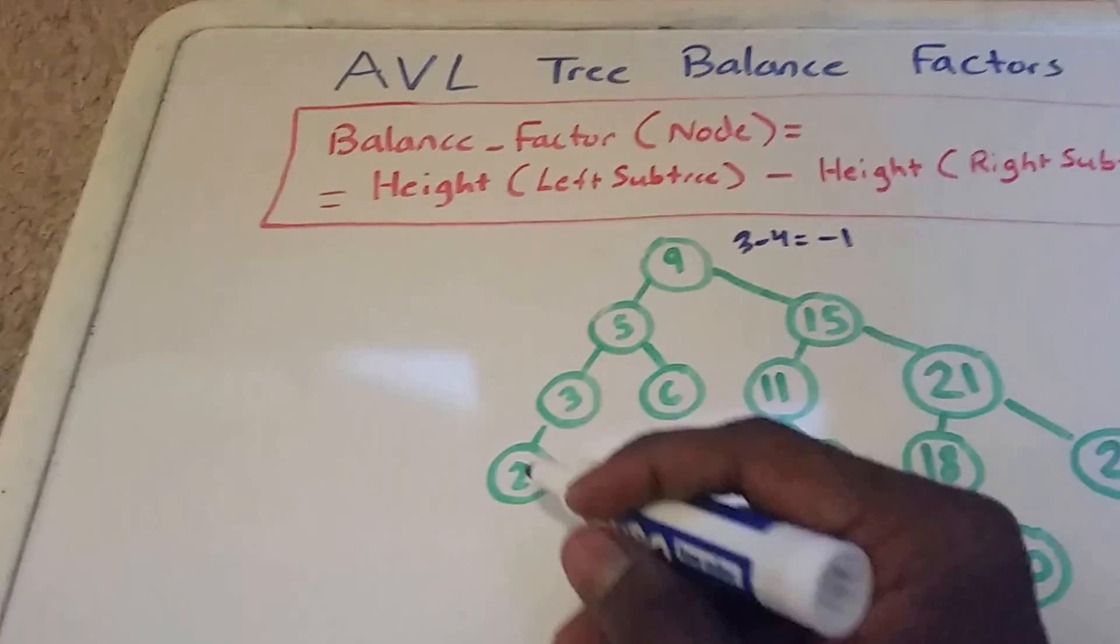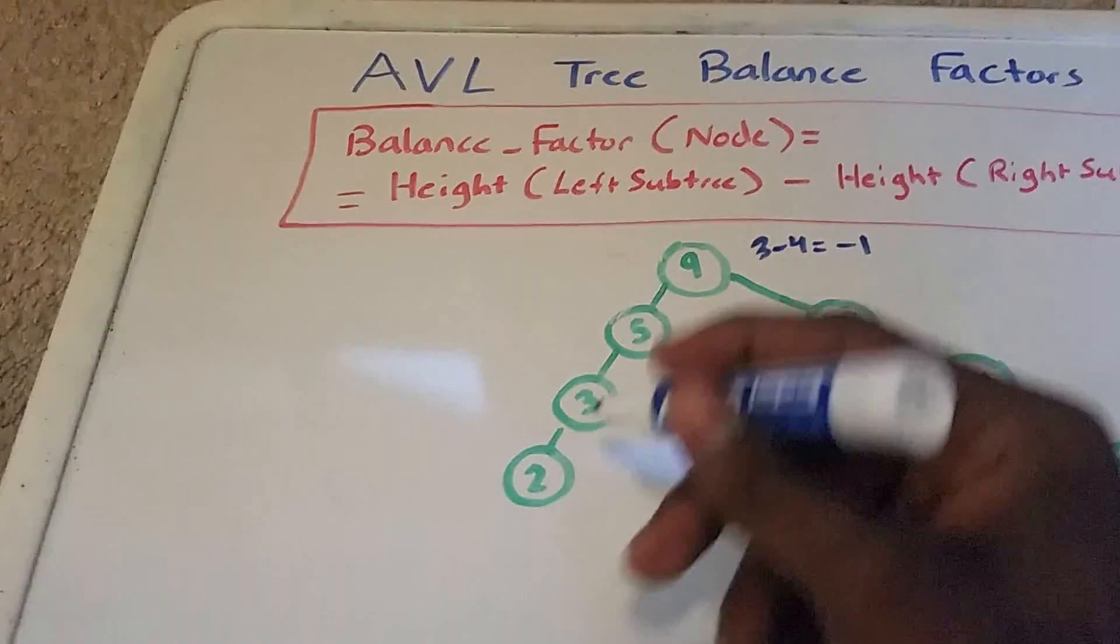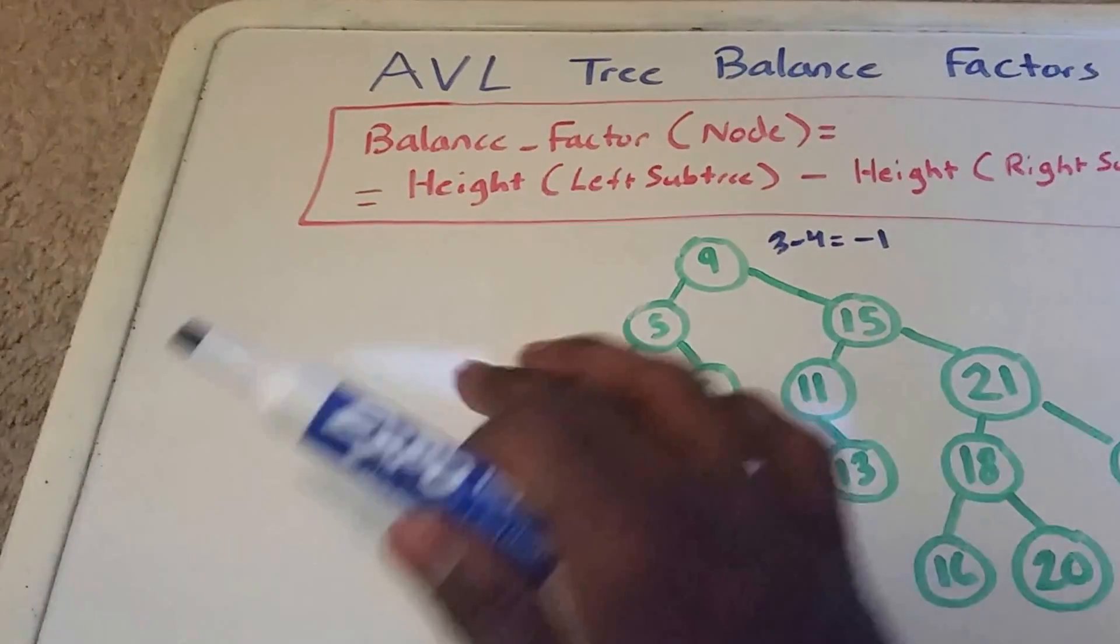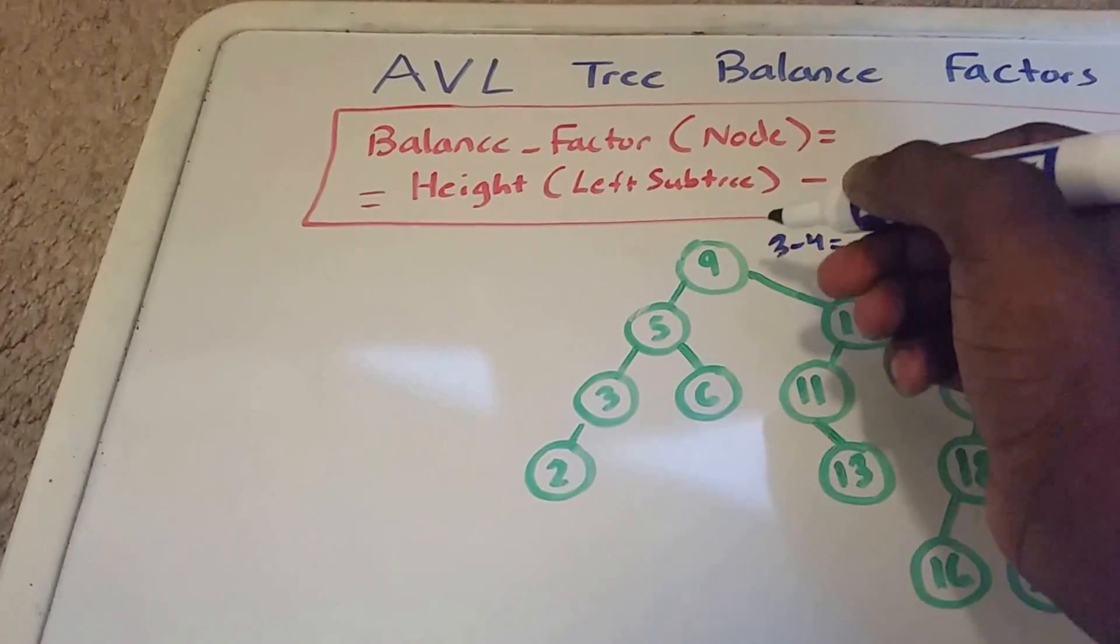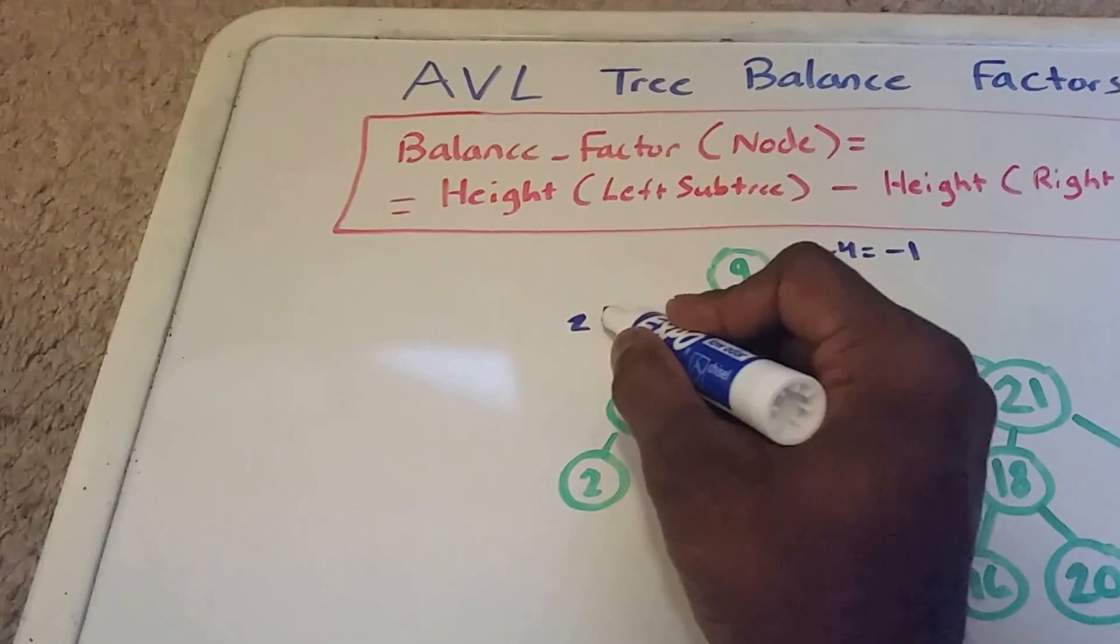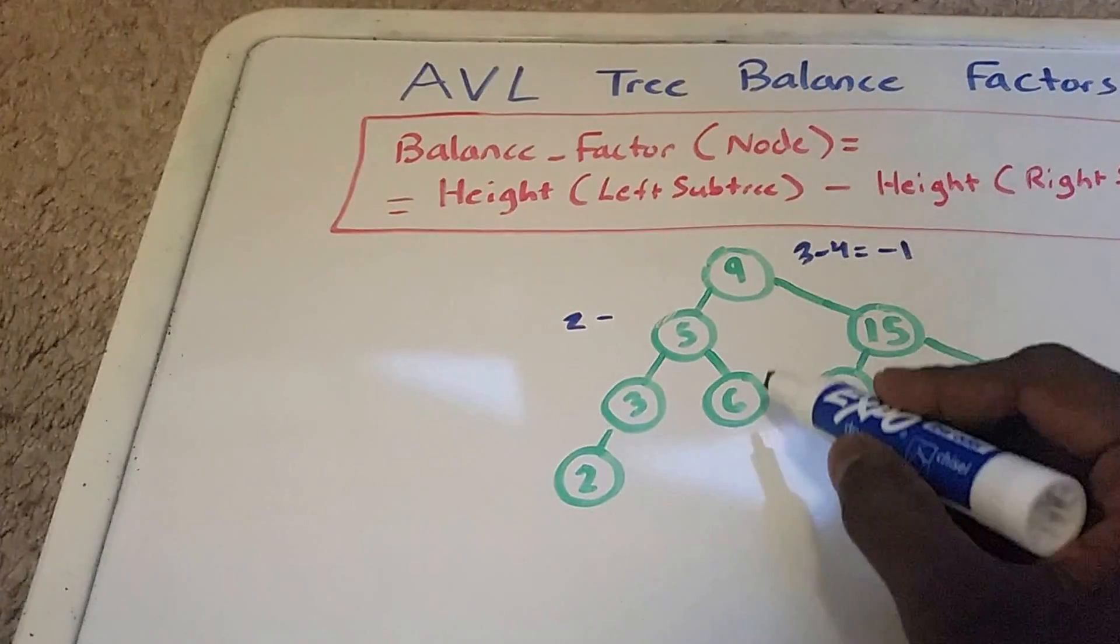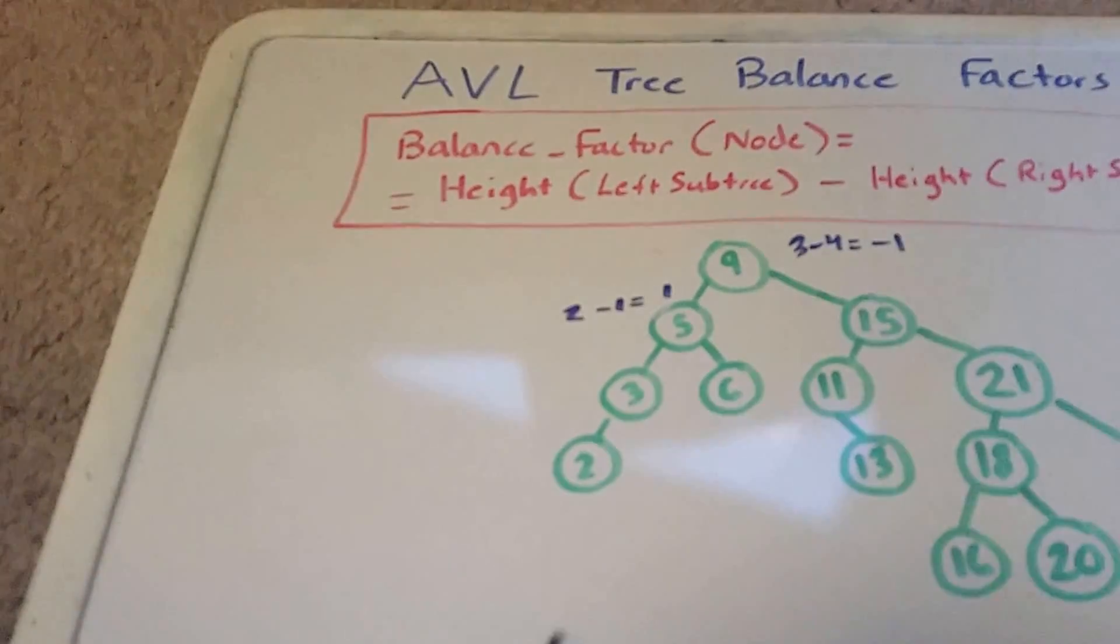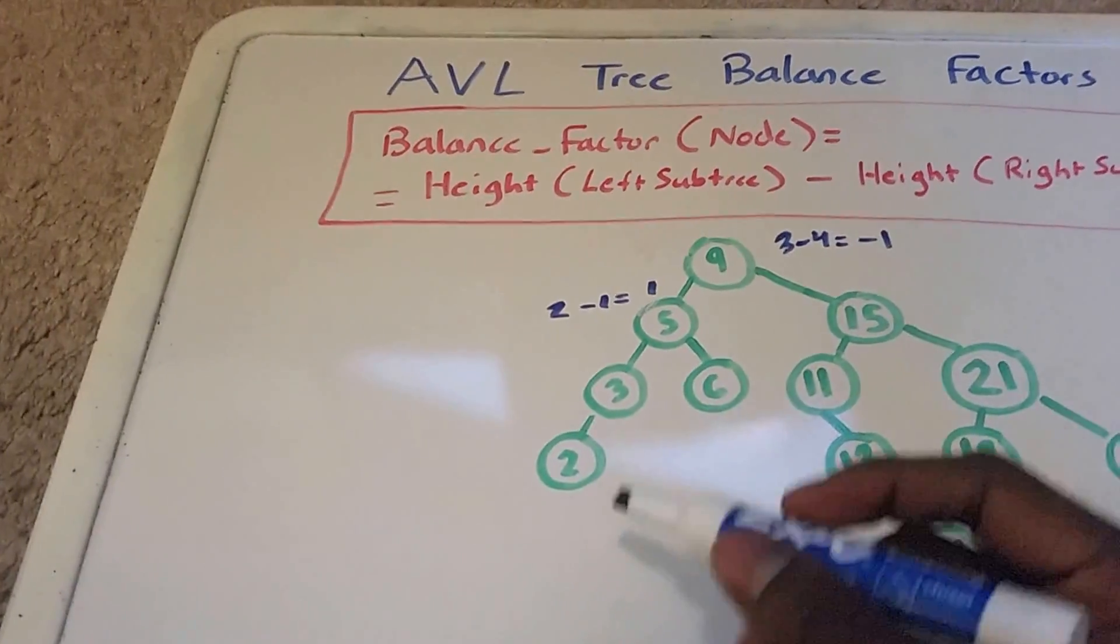So next, let's check out this node here. We have the number 5. And its subtree on the left is 1, 2. So we're going to put a 2 here. And we have 2 minus the height of the right, which is 1. So this gives us 1 here. So that node has a balance factor of 1.